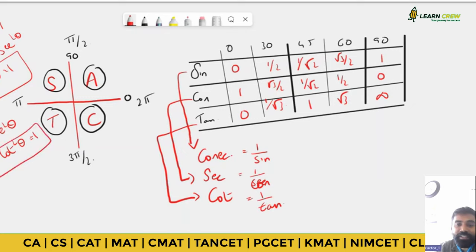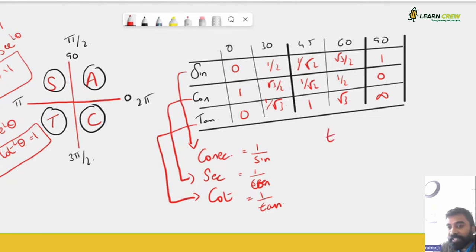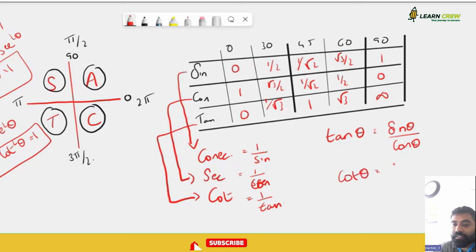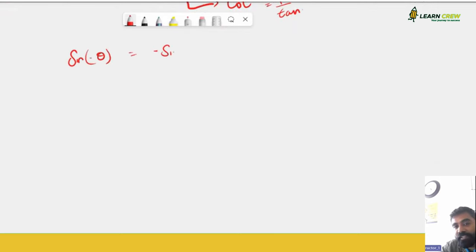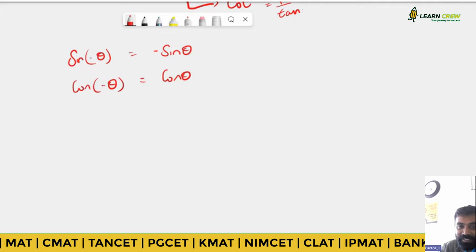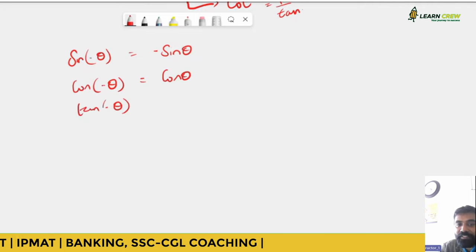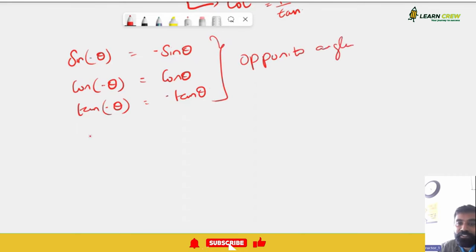tan θ can be written as sin θ / cos θ, and cot θ can be written as cos θ / sin θ. These are the basics. Also, sin(−θ) = −sin θ, cos(−θ) = cos θ, and tan(−θ) = −tan θ. The same holds for the reciprocal functions. These are called opposite angles.